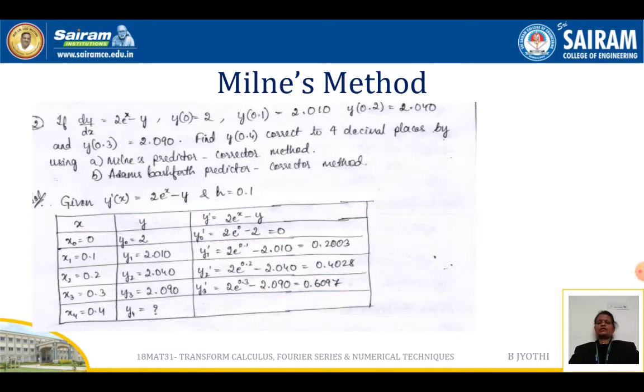Let us solve the problems in Milne's method. If dy/dx = 2e^x - y, y(0) = 0 and y(0.1) = 2.010,